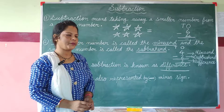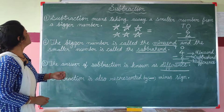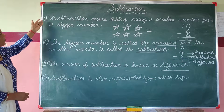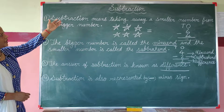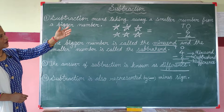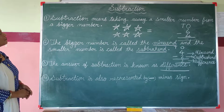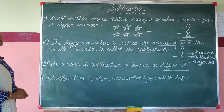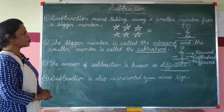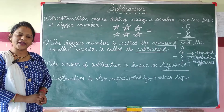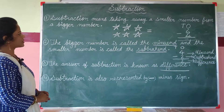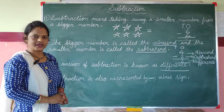Look at the blackboard. I write some rules here. Number 1: Subtraction means taking away a smaller number from a bigger number. This means that when we take a smaller number from a bigger number, we have a subtraction.